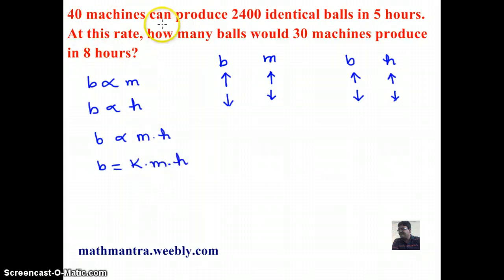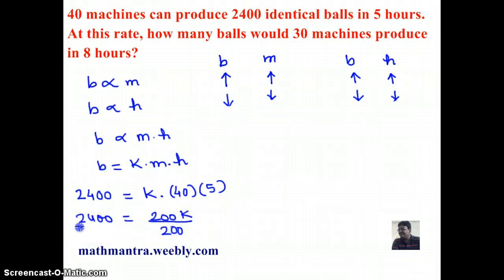Let's use the first information given to us to get the value of K. 2400 is the value of B given to us. K times M is 40, and H is 5, which means 2400 equals 200 times K. So, dividing by 200 on both sides, I get K as 12.